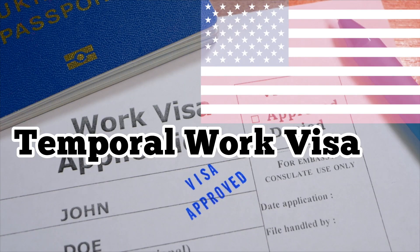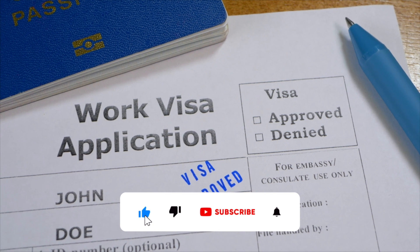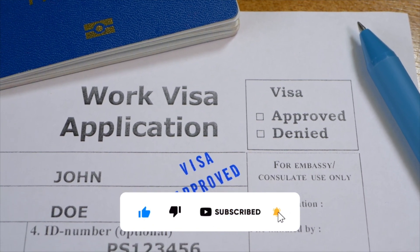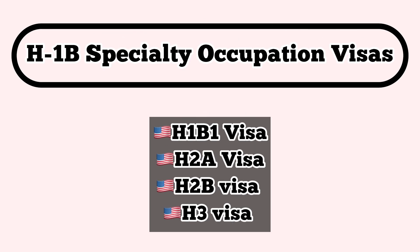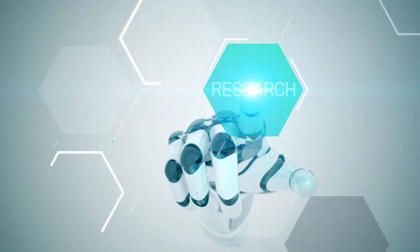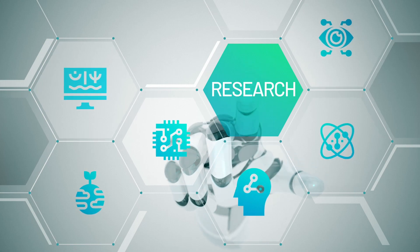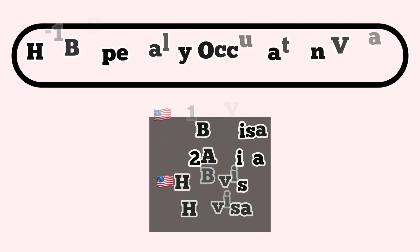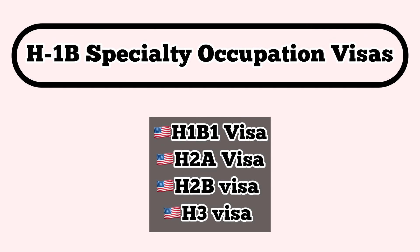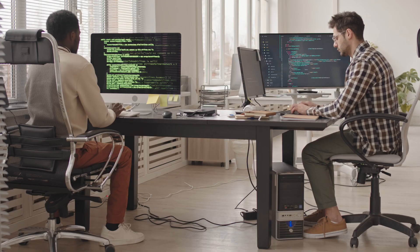The first type of non-immigrant visa under this category is called the Temporary Work Visas. These visas are issued for temporary work in the United States. Under this category of work visas we have the H1B visa, H2A, H2B, H3 visa, and L1 visa category. A specialty occupation normally requires the application of specialized knowledge and a bachelor's degree or an equivalent of work experience.